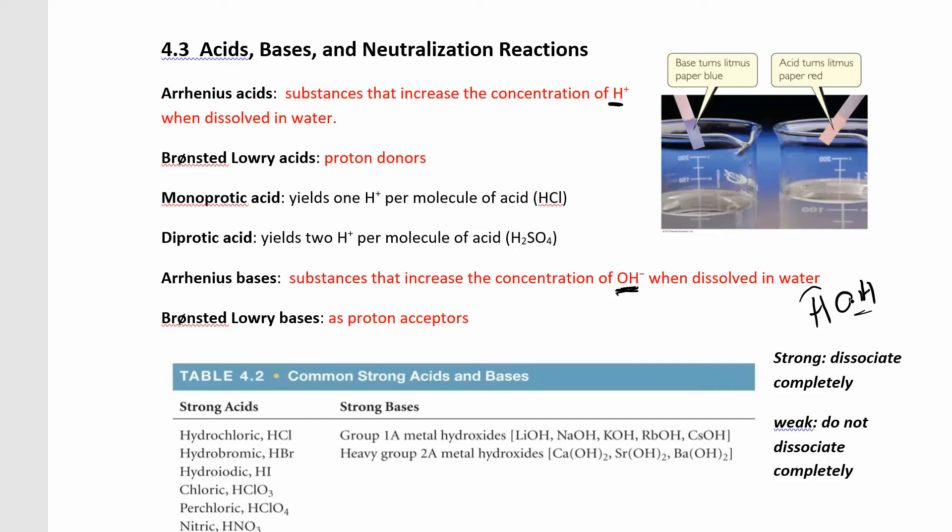More useful for us right now is the Bronsted-Lowry definition, which says a Bronsted-Lowry acid is something that donates protons, a Bronsted-Lowry base is something that accepts protons. And a proton, for our purposes, is just an H+.